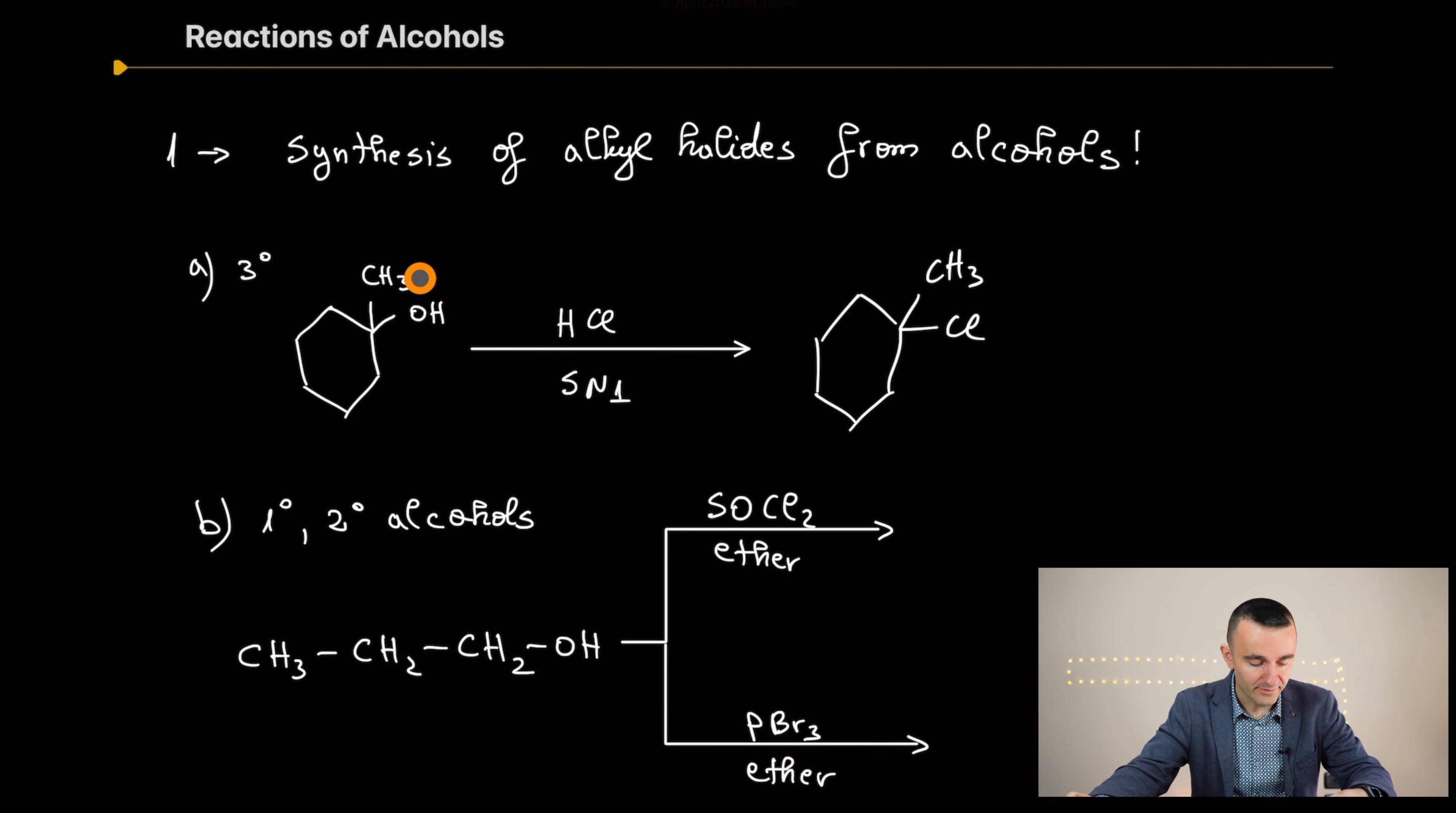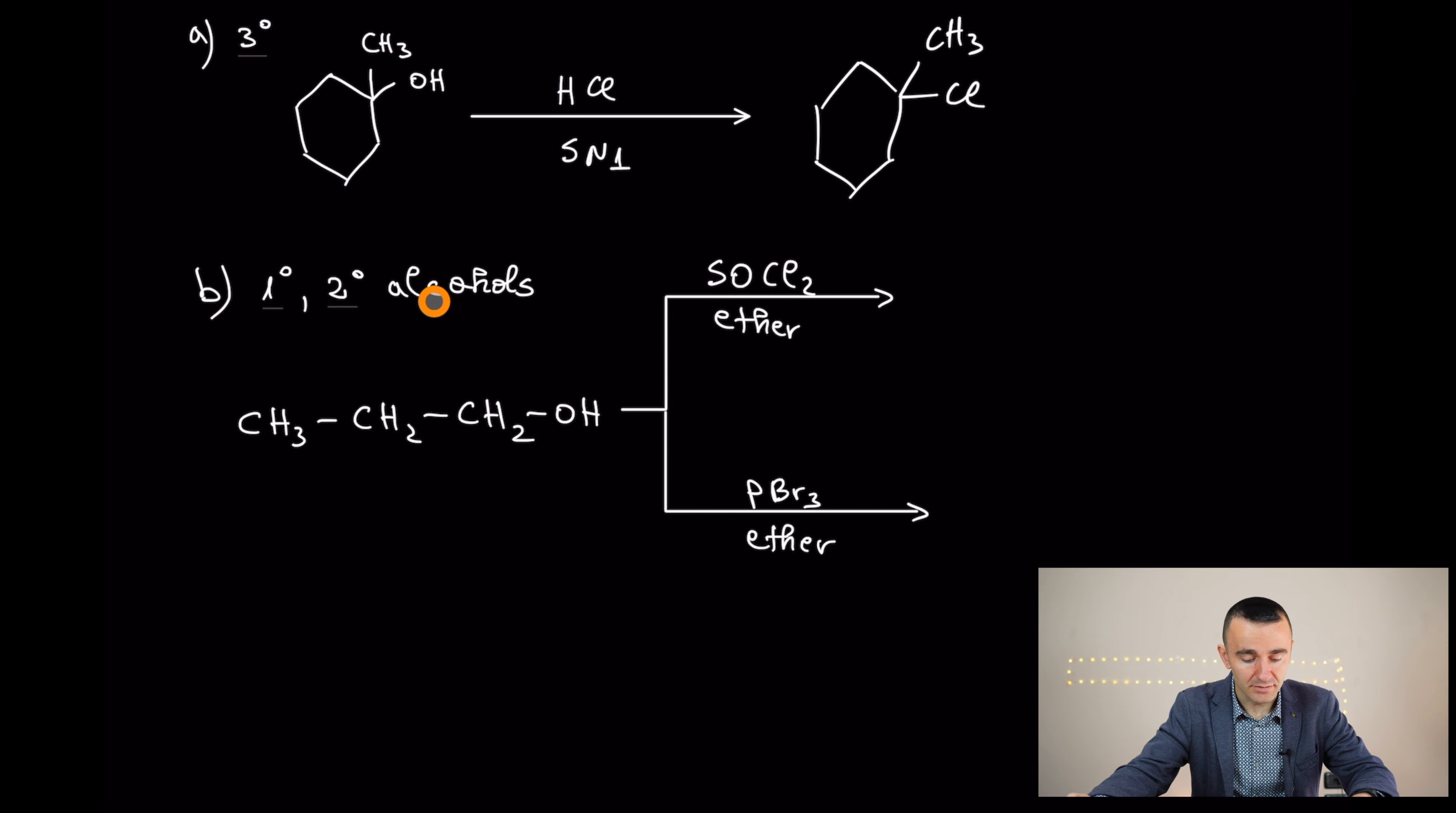But if you have primary and secondary alcohols, they need a special reagent to be converted. The two most typical ones are thionyl chloride in ether and phosphorus tribromide. Keep those two reagents in mind. So what they are going to give from this compound is going to give the corresponding alkyl halide.